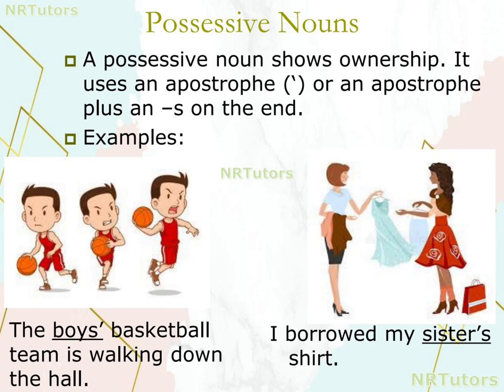Next one is possessive nouns. A possessive noun shows ownership — it uses an apostrophe at the end, or we can simply say that possessive nouns show the belongingness of a thing. For example: 'The boys' basketball team is walking down the hall.' 'I borrowed my sister's shirt.'